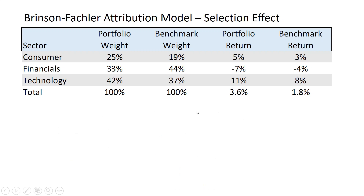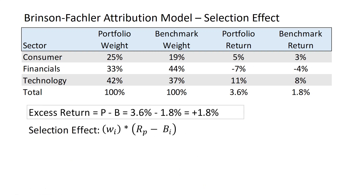For the selection effect, that's where we bring in our portfolio returns. We outperformed by 1.8% overall. The selection effect uses the benchmark weight — so we take away our allocation decision and assume we allocated the same as the benchmark: 19%, 44%, and 37%. Then we compare our sector returns versus the benchmark sector returns. For consumers, it's 19% times the 2% difference — a positive number showing good stock selection. You can see right away we had bad stock selection in financials — our stocks did much worse than the market. And in technology, we had good selection, outperforming by 3% within that sector.